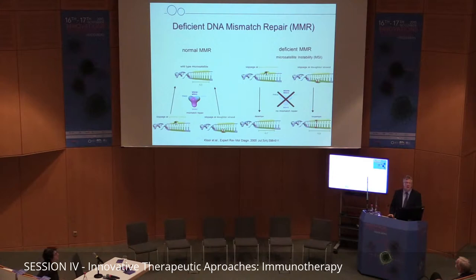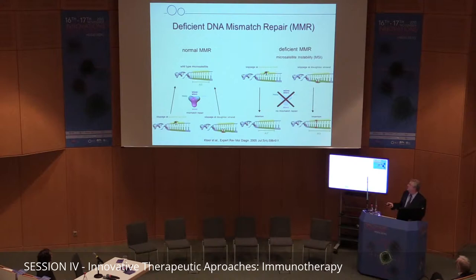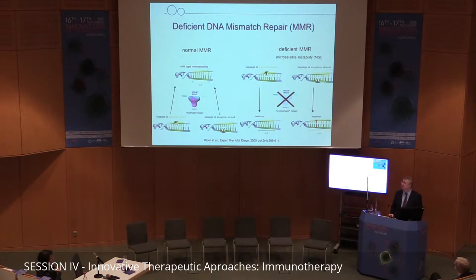In the microsatellite instability mechanism, the chromosomal structure, the numbers of chromosomes, and the overall chromosomal content remain more or less constant. But on the sequence level, dramatic changes occur simply because the DNA mismatch repair, mediated by a fairly complex enzyme system, is lost in these cells. This leads to the accumulation of single insertions or deletions in sensitive target sequences — usually repetitive DNA sequences, or microsatellites, which are normally mononucleotide repeats somewhere in the genome.